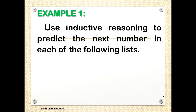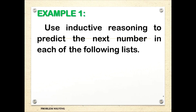Example 1: an application of inductive reasoning. Use inductive reasoning to predict the next number in each of the following lists. This is an example of inductive reasoning because we are basing our next term on the previous numbers — we are just finding a pattern. After finding the pattern, we can generalize what the pattern is all about.